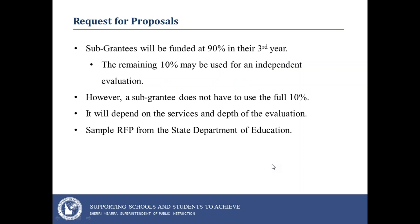Regarding request for proposals: next year, grantees entering their third year of programming will be funded at 90% of their original award. That remaining 10% may be used for an independent evaluation. However, a subgrantee does not have to use the full 10% — you have up to that amount. It will depend on the services and depth of evaluation you're requesting. For example, if you require your evaluator to do 18 on-site observations, that's obviously going to cost more than just two on-site observations.